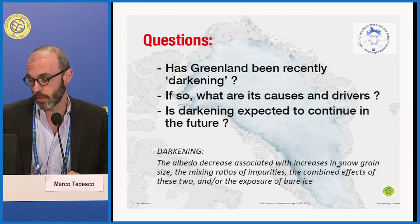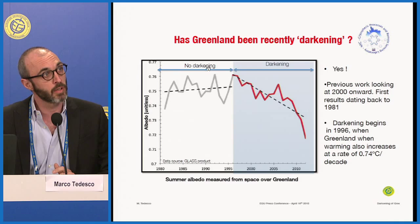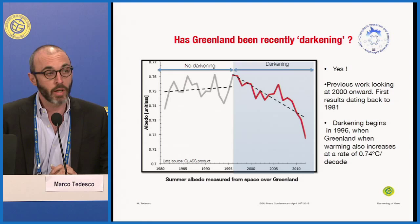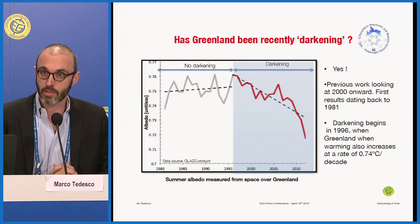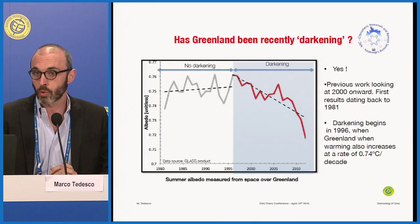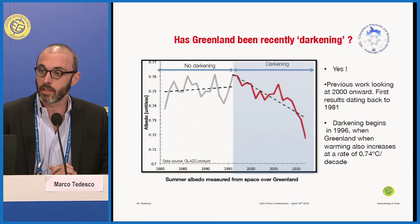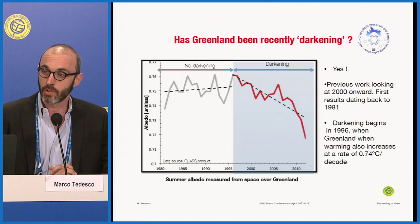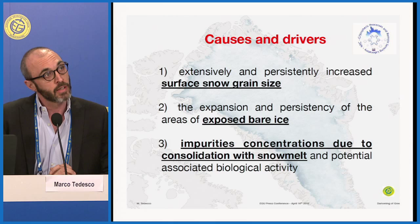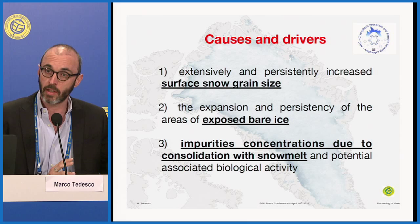This plot shows the albedo averaged over the entire Greenland ice sheet between 1981 and 2012. You may be familiar with results starting in 2000 when the MODIS sensor was launched, but we extended the time series before that. We found that darkening — basically reduction of albedo — started around 1996 and has been accelerating until 2012. This corresponds to the same year when there was also a beginning of warming of the Greenland ice sheet of about 0.74 degrees Celsius per decade. We came up with three hypotheses that explain about 90% of the variability of the albedo we observed.